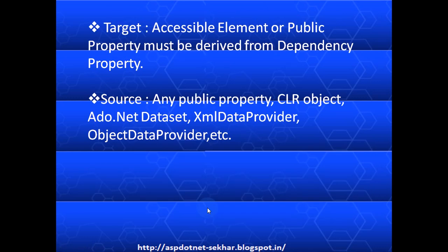The target can be any accessible element or public property, but it must be derived from a dependency property or dependency object. Almost all controls in WPF are derived from dependency object. And the source can be any public property, any data set, or any XML data provider.